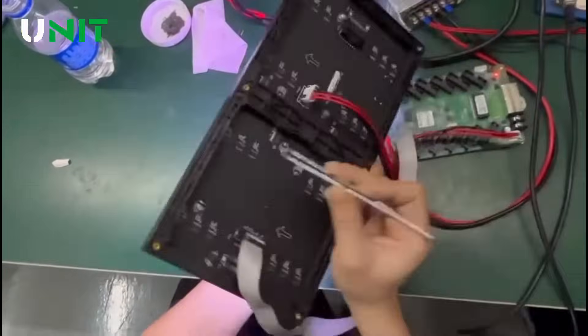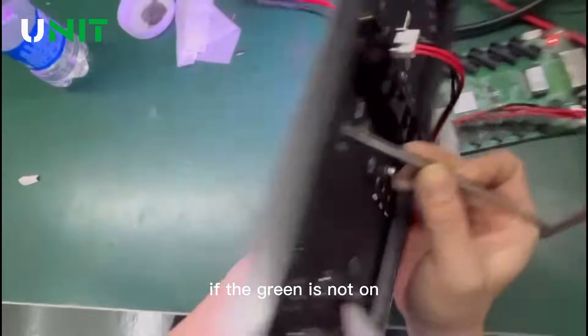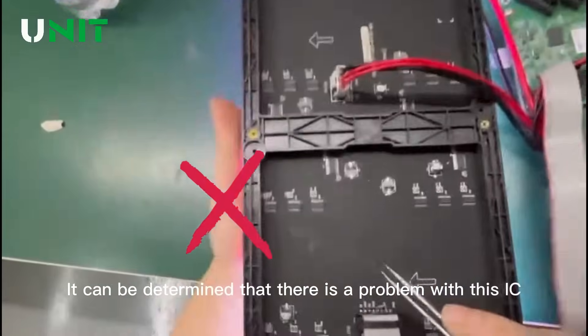Use tweezers to clamp the last resistor. If the green is not on, it can be determined that there is a problem with this IC.